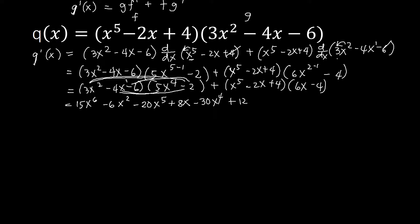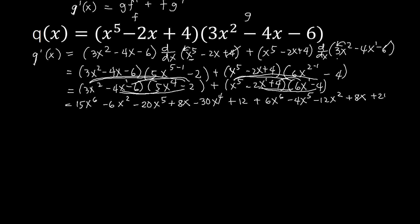Now distributing the second group: x to the power of 5 times 6x gives plus 6x to the power of 6. Distribute to the other one: x to the power of 5 times negative 4 is negative 4x to the power of 5. Next, distribute negative 2x to 6x: negative 2 times 6 is negative 12, x to the power of 1 plus 1 is 2. Negative 2x times negative 4 is positive 8, copy x. Lastly, 4 times 6x is 24x, and 4 times negative 4 is negative 16.